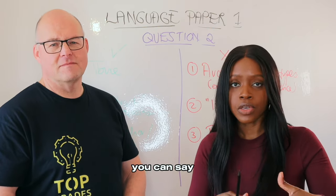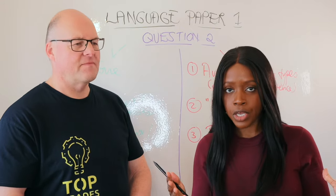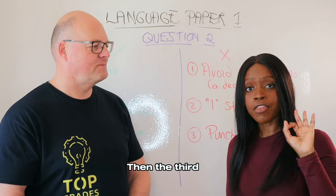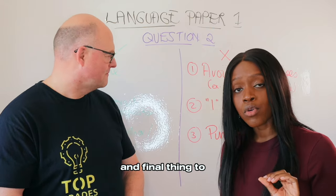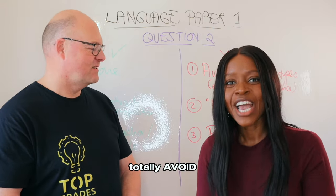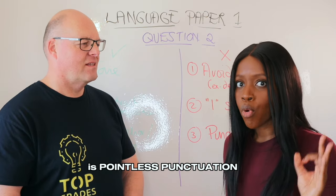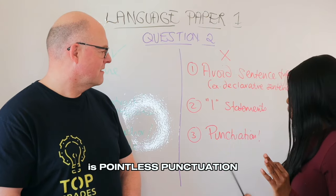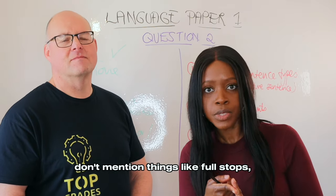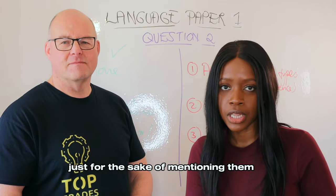So instead of saying 'I think this,' you could say 'we as readers...' Make sure you avoid the 'I' statements. The third and final thing to absolutely avoid — maybe with the exception of listing — is pointless punctuation. Don't mention things like full stops or commas just for the sake of mentioning them. Punctuation is a structure point and a structure observation, and even when talking about structure, using very obvious and basic punctuation like full stops and commas doesn't show the examiner you have a handle on what's been written.